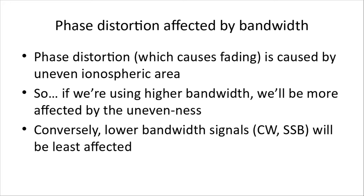There's a thing called phase distortion, and it's affected by the bandwidth of our signal. CW or Morse code is good with just 500 hertz of bandwidth. Voice in FM might need 3 kilohertz plus separation. The less bandwidth we use, the less we're affected by phase distortion. Phase distortion is caused by the ionospheric area being uneven — if we're using higher bandwidth, we're spreading the signal out and are more affected by the unevenness. CW and SSB, which use the least bandwidth, will be the least affected.